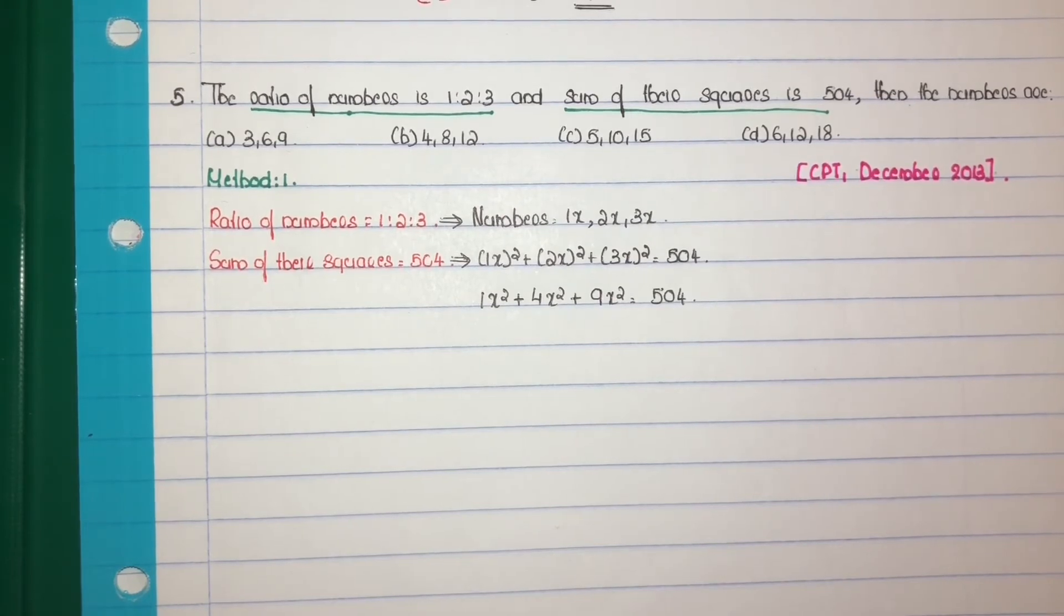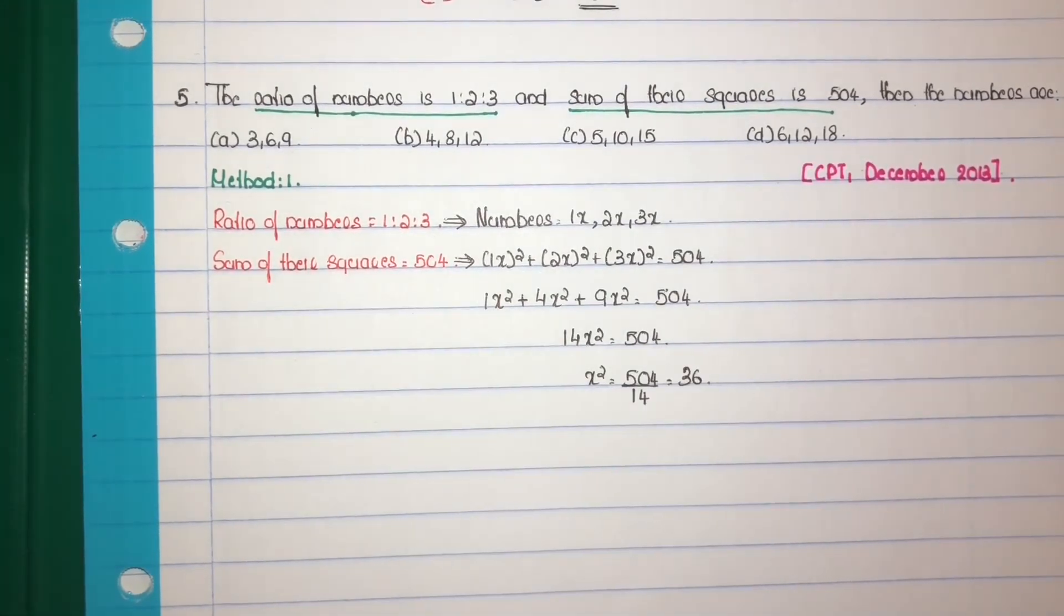1 plus 4, 5 plus 9, 14. 14x square is equal to 504. x square is equal to 504 by 14. That is 36. x square is equal to 36.